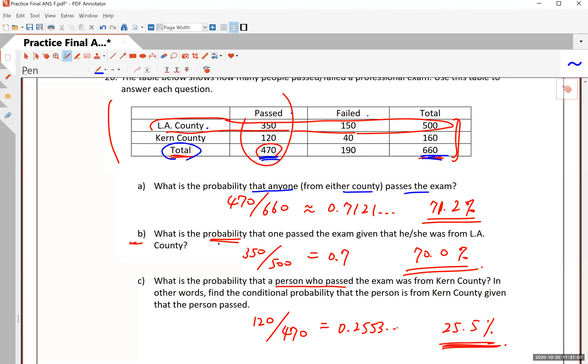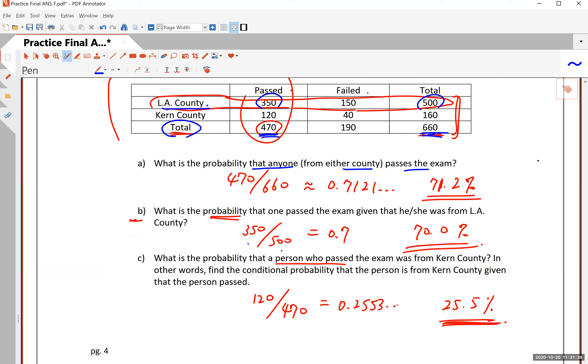Part B, what is the probability that one passed the exam given that the examinee was from LA County? So now you look at only the first row, LA County, 350 people passed out of 500. And so 350 divided by 500 is 70%.